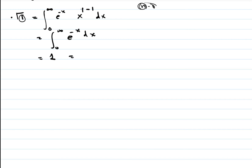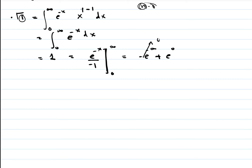To elaborate, we integrate e raised to minus x, giving e raised to minus x divided by minus 1, evaluated from 0 to infinity. This gives minus e raised to minus infinity minus (minus e raised to 0). The first term leads to 0 and the second leads to plus 1. So the result is 1. You can solve this way, or simply use the property that gamma of 1 equals 1.